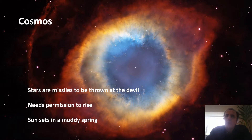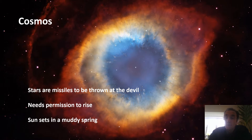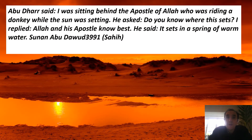In Surah 21:30 it says: "Have not those who disbelieved known that the heavens and the earth were one connected entity, then we separated them?" Could this be an insight into the Big Bang and the expanding universe? Let's give a little credit — but this knowledge was well known even then and taught by older civilizations, such as Hindus and Egyptians. So this is not new.